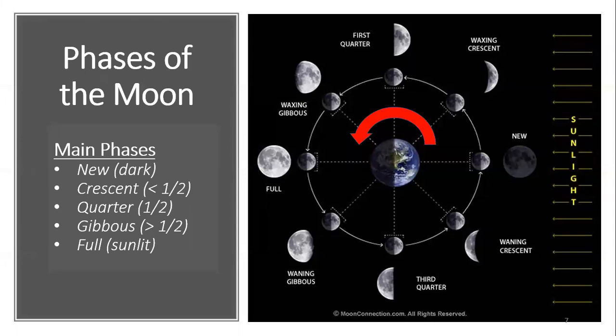Phases of the moon. In your lab, you will utilize the following figure to answer your lab questions related to moon phases and the related tides. Let's begin by learning the moon phases. First, it's important to understand that moon phases are neither related to eclipses nor the Earth's shadow being projected onto the moon. Moreover, the moon has no self-illumination — it is simply highly reflective. Each moon phase is the result of the sun's illumination, or lack thereof, coupled with our perspective as seen from Earth.